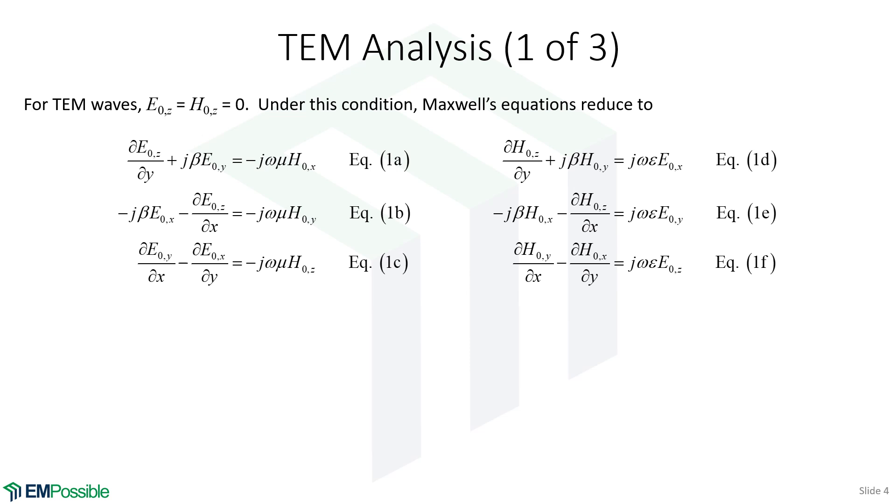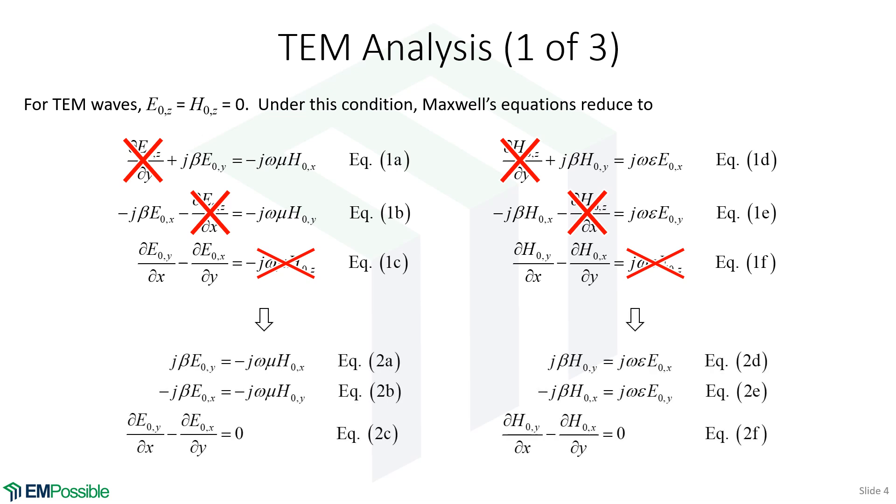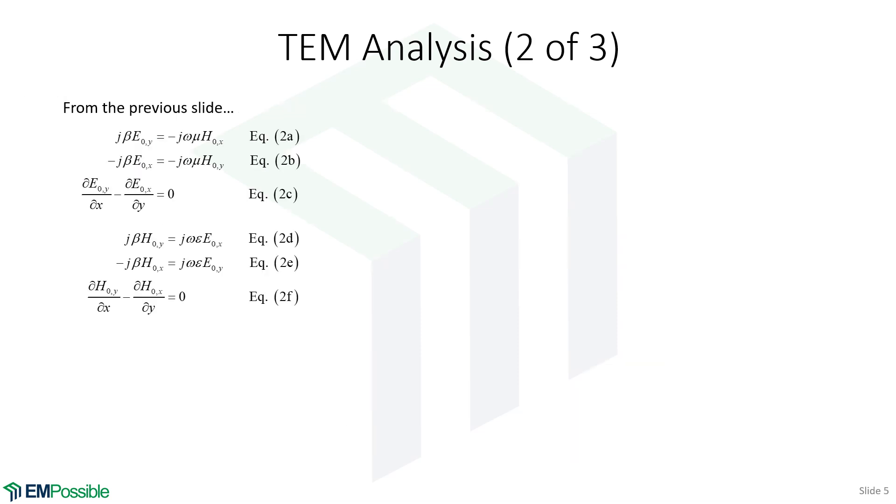Now, for TEM waves, it turns out E₀z and H₀z are both zero. So what we can do is go back to our original set of six coupled partial differential equations after the solution was plugged back in, and look anywhere there is a Z component of either the electric or the magnetic field, and we can just cross it off. And when we do that, our six equations simplify considerably. So here's the six equations from the previous slide.